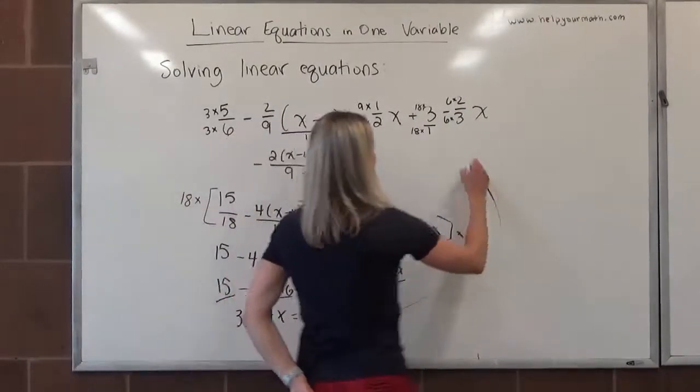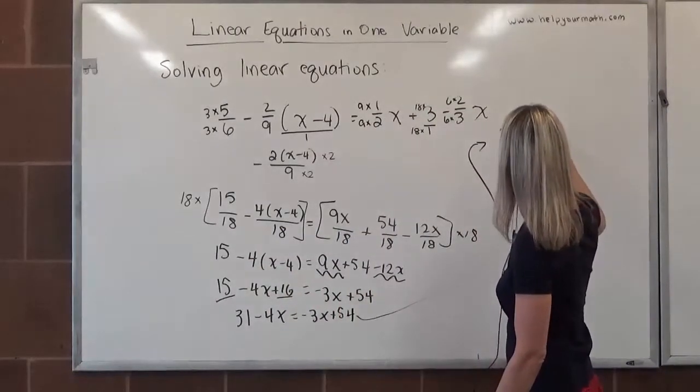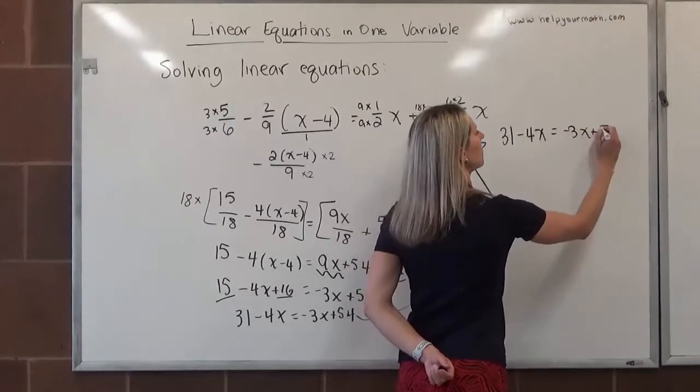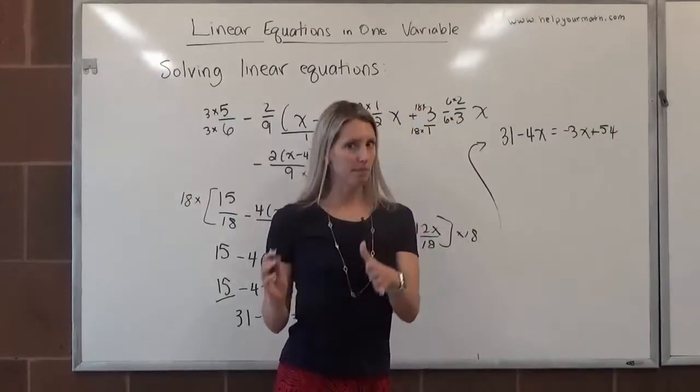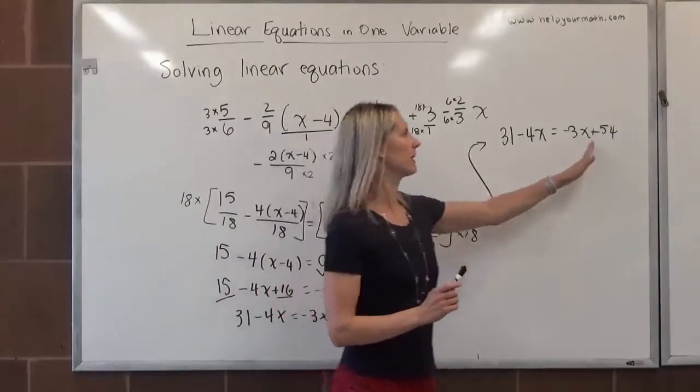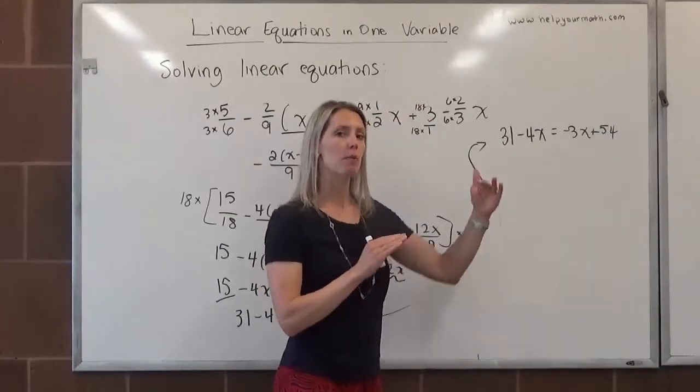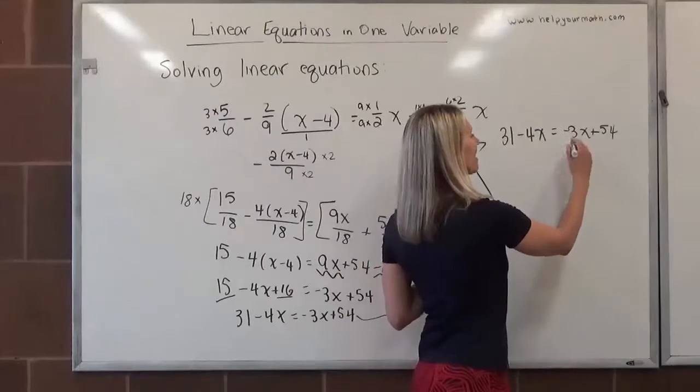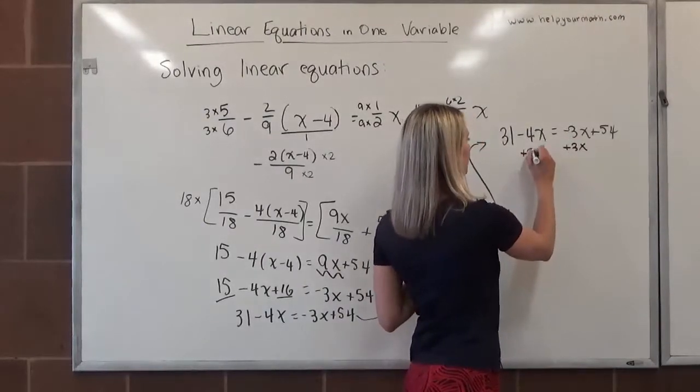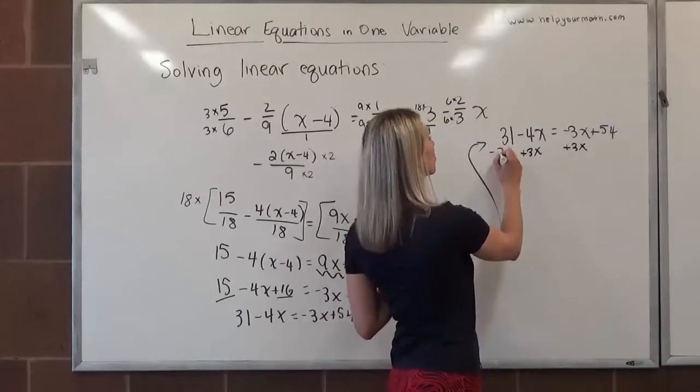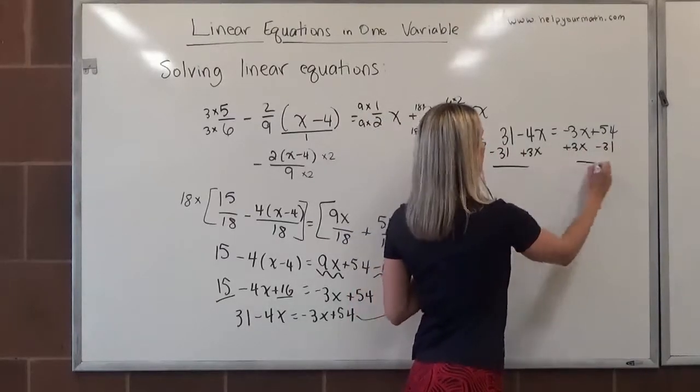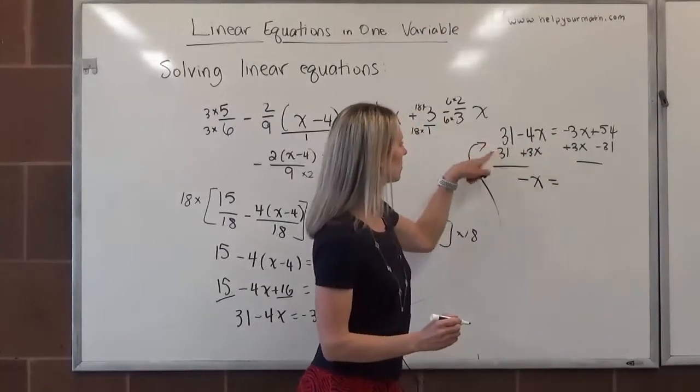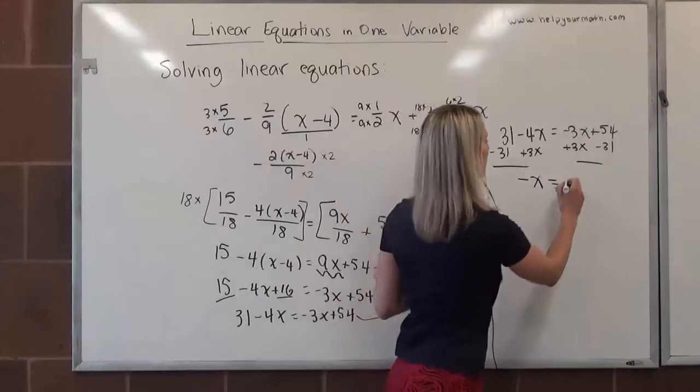I'm going to move over here so that I have a little more room. 31 minus 4x equals negative 3x plus 54. Each side is as simplified as it can be, we can't combine those because they're not like terms. So now we're ready, we're going to get all the x's on the left-hand side and the constants on the right-hand side. If I'm going to do that, I'm going to add 3x to both sides, and I'm going to subtract 31 from both sides. Negative 4x plus 3x is negative x or negative 1x, those cancel, those cancel, and here we end up with 23.